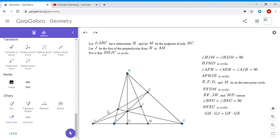So how do we do this? First notice that since AFHJE is cyclic, by power of a point on G, you have GF times GE equals GH times GJ. So that's step one.